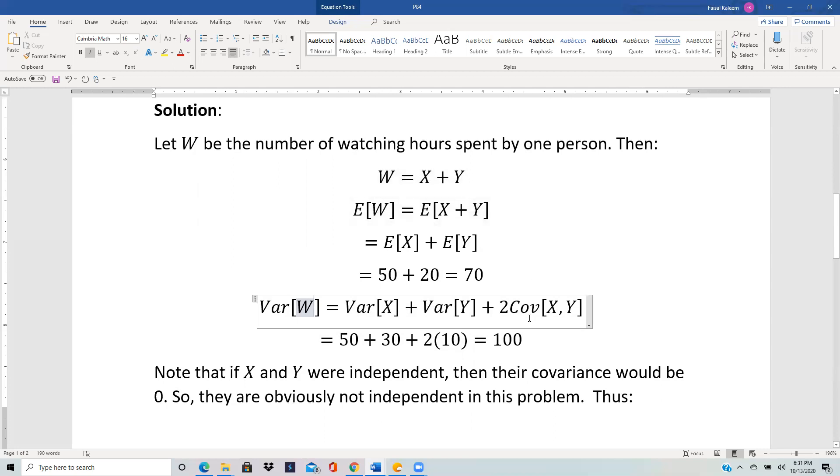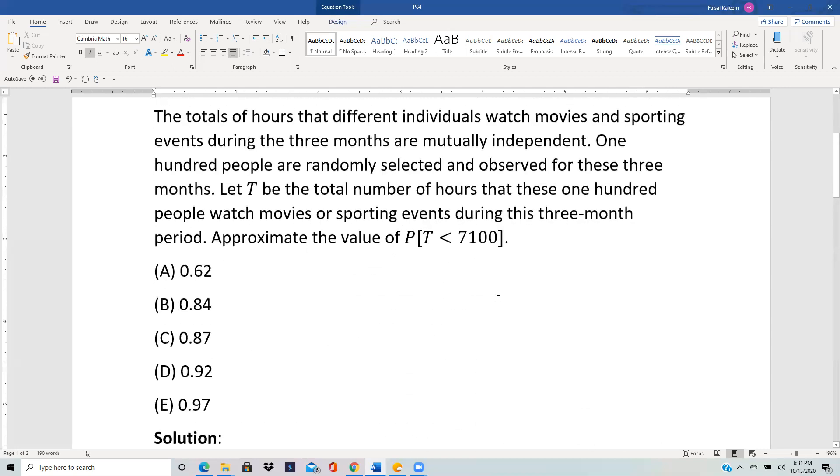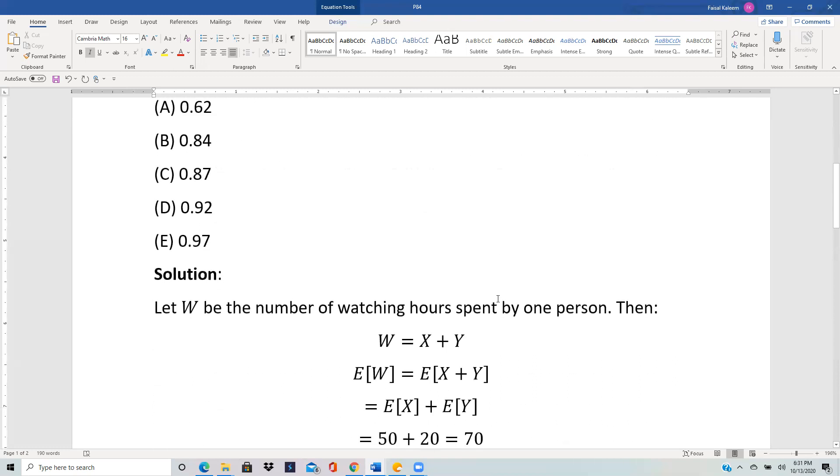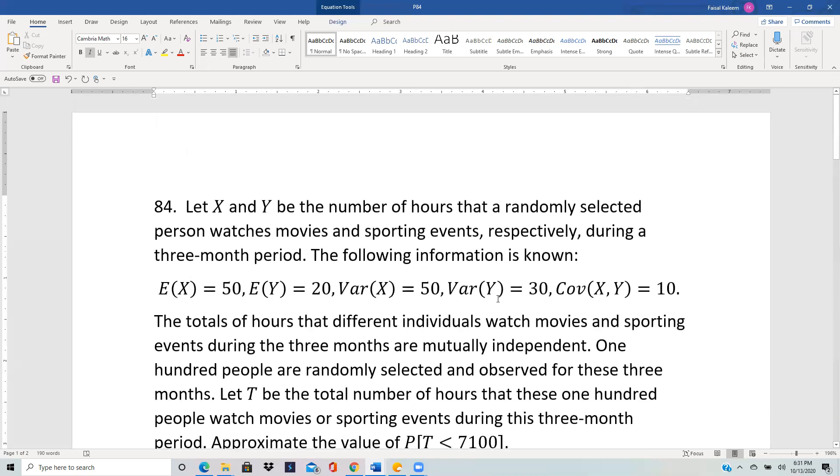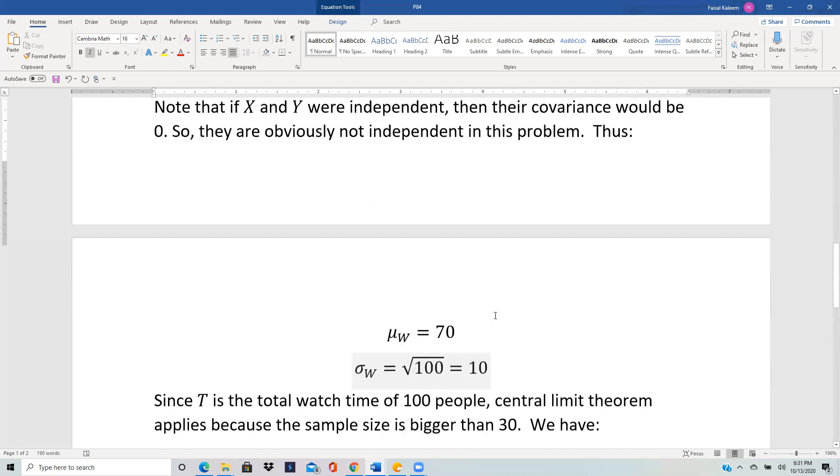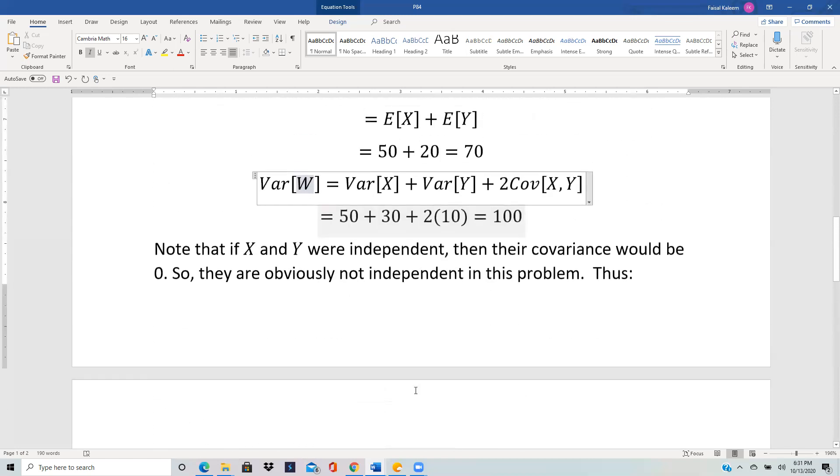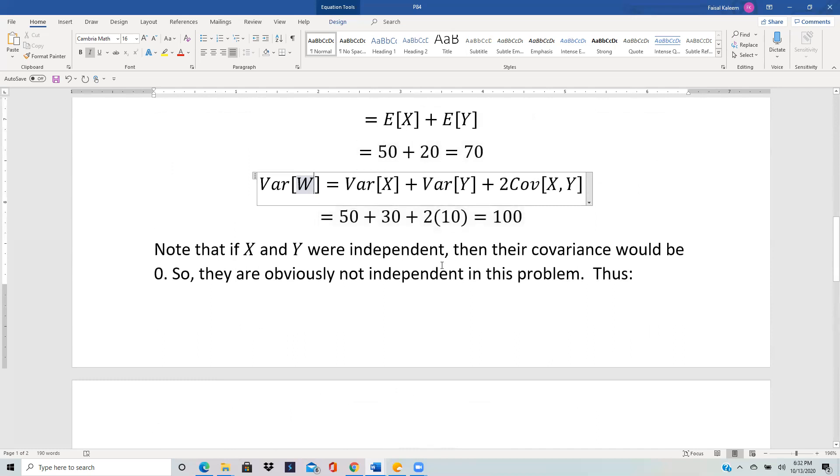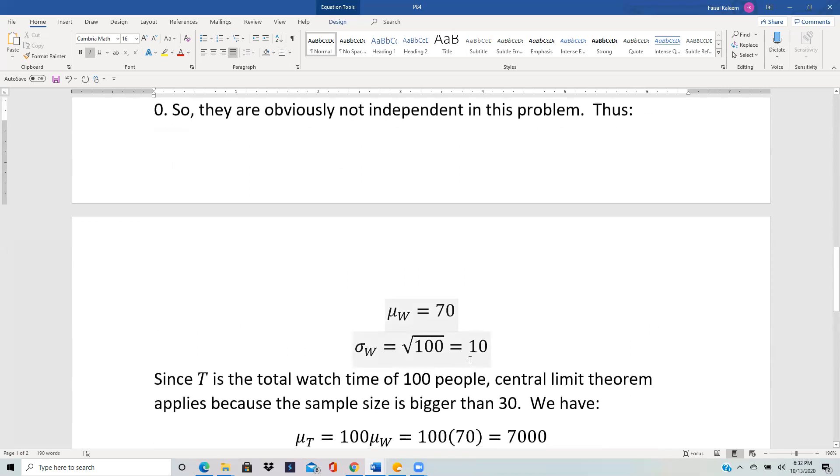In this case, we're not given that they're independent, so we do have a covariance. We are given that the covariance is 10. So we put in the values and get the variance of W to be 100. The mean of W is the expected value, which is 70, and the standard deviation is the square root of variance, so that's 10.